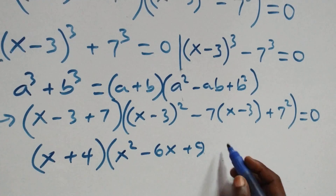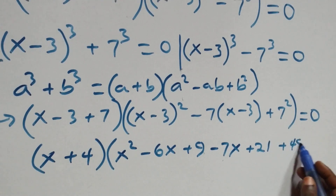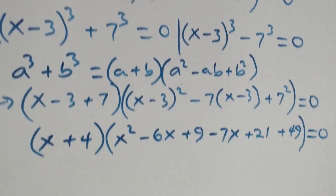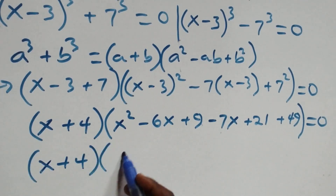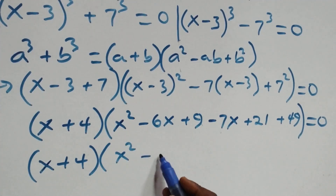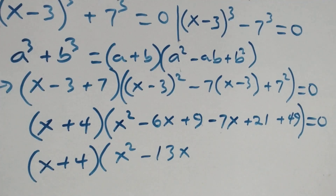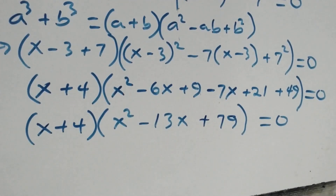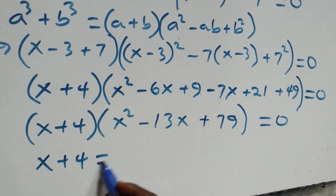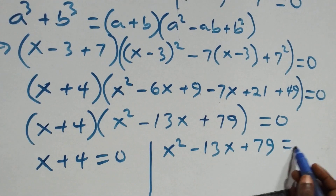Expanding, we have minus 7 times the bracket giving us minus 7x plus 21, then plus 7 squared which is 49. This becomes x plus 4 in brackets, times x squared minus 6x minus 7x giving us minus 13x, then 21 plus 49 giving us 70, then plus 9 giving us 79, close bracket, equals to 0. Then here we have two cases: x plus 4 equals to 0, or x squared minus 13x plus 79 equals to 0.